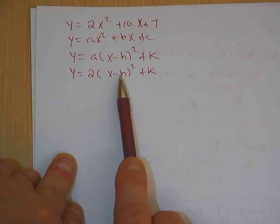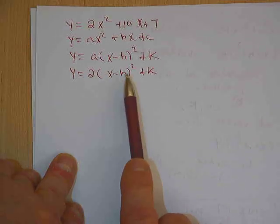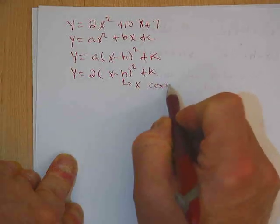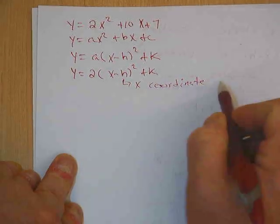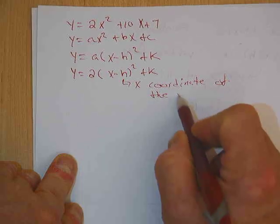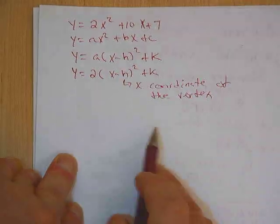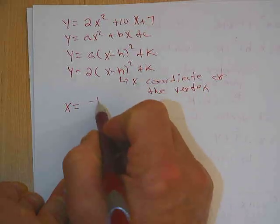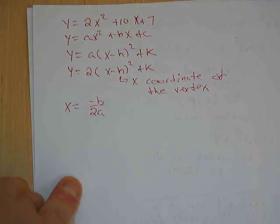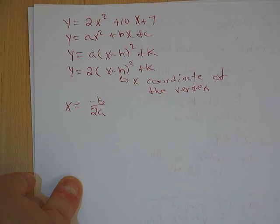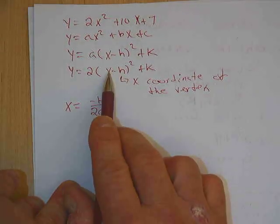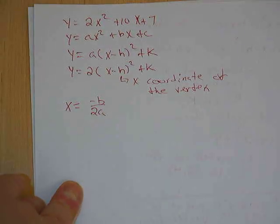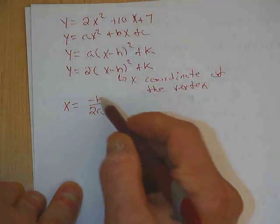Now if you remember from this weekend's homework we found the x coordinate of the vertex, which that's what h is. h is the x coordinate of the vertex. And we found the x coordinate of the vertex using the equation x equals the opposite of b over 2a.